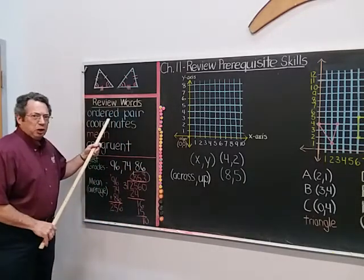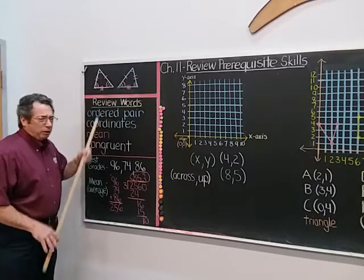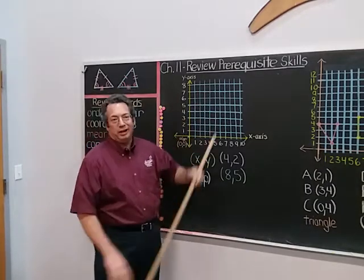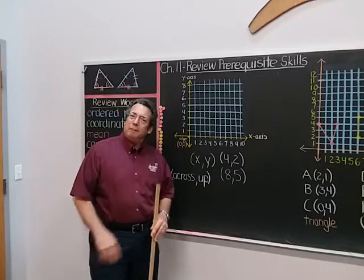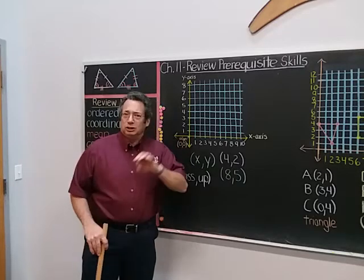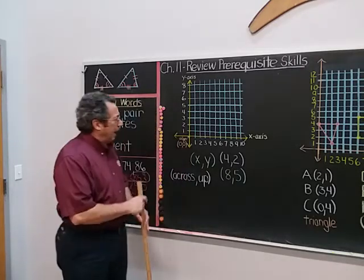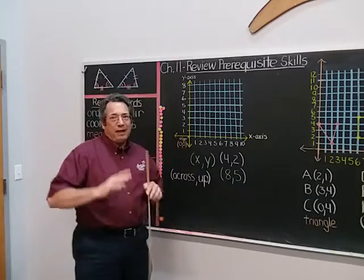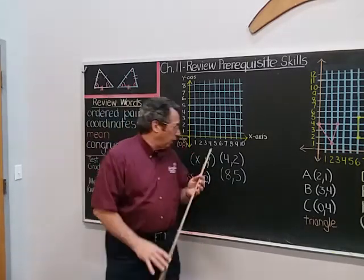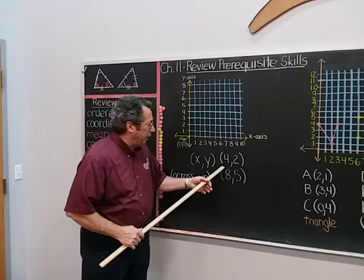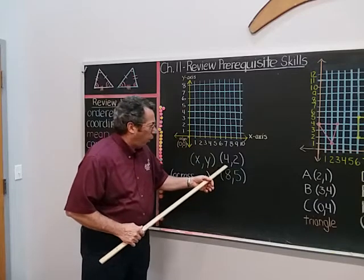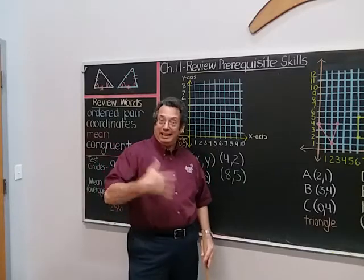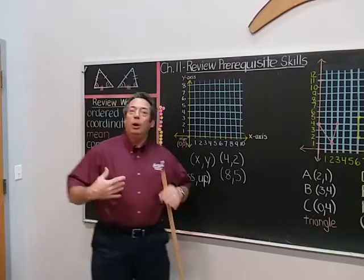Let's look at some review words. Ordered pair. An ordered pair, we know, has to do with a coordinate grid. An ordered pair is two numbers — it's a pair, meaning two numbers — and these two numbers have a special order to them. So here I have in parentheses the ordered pair four, two. It's very important that four is first, and then the two. That's an ordered pair.